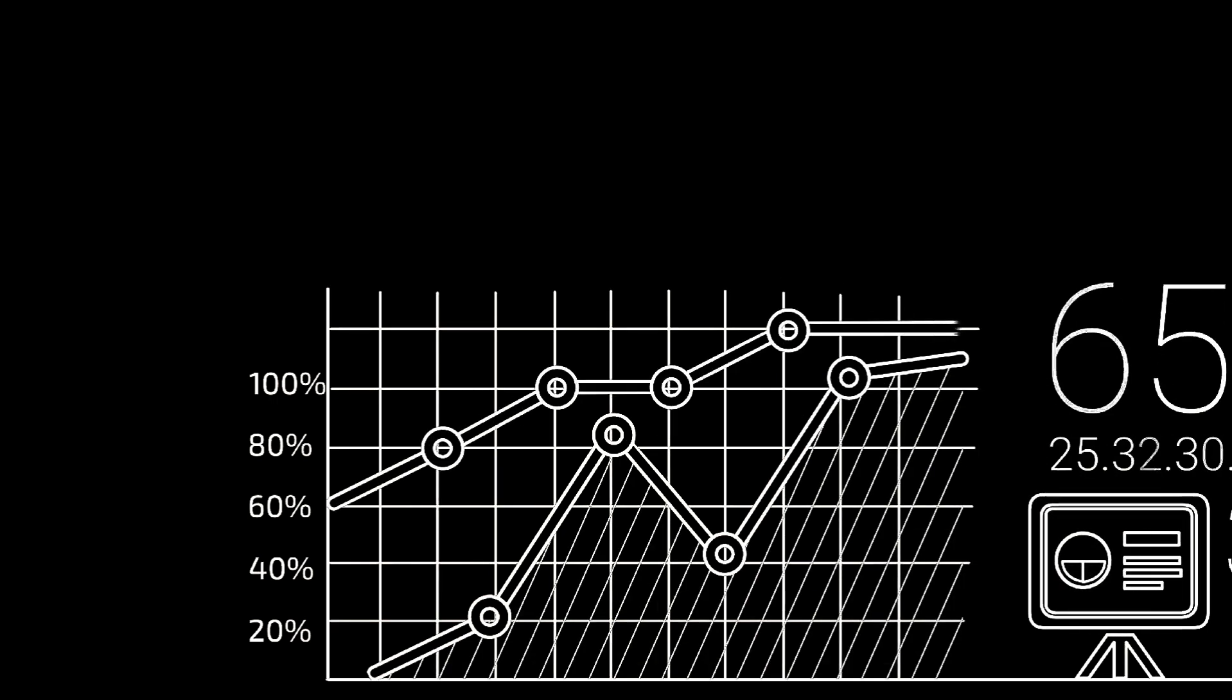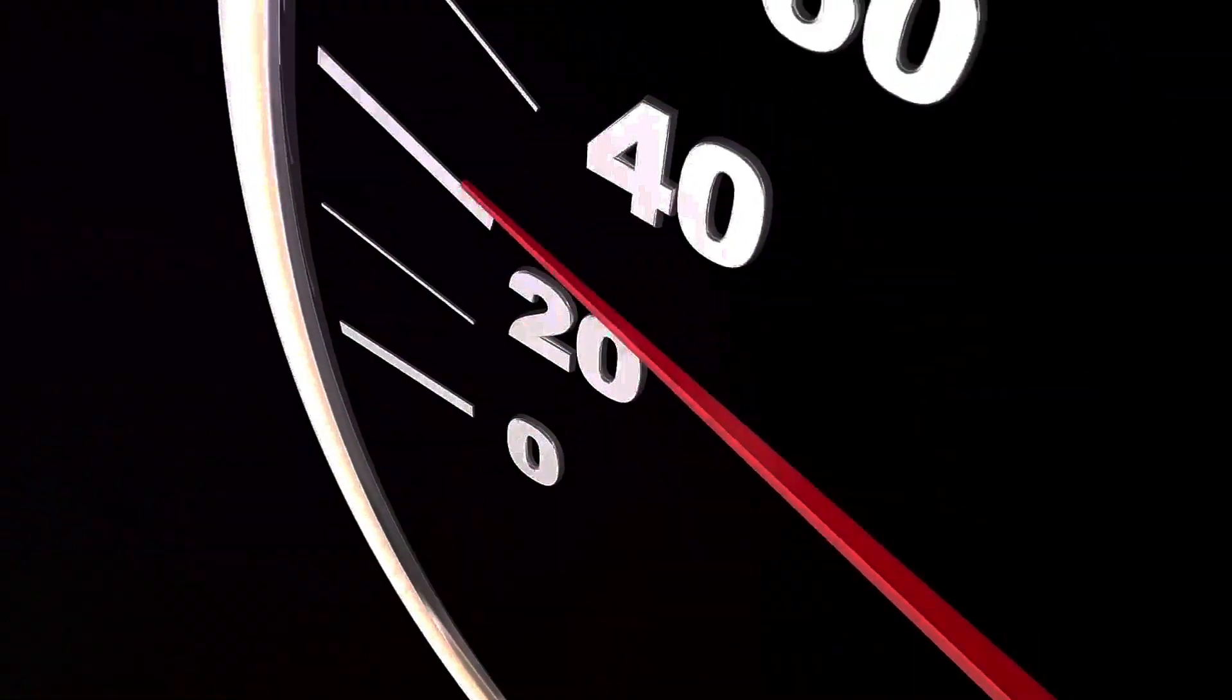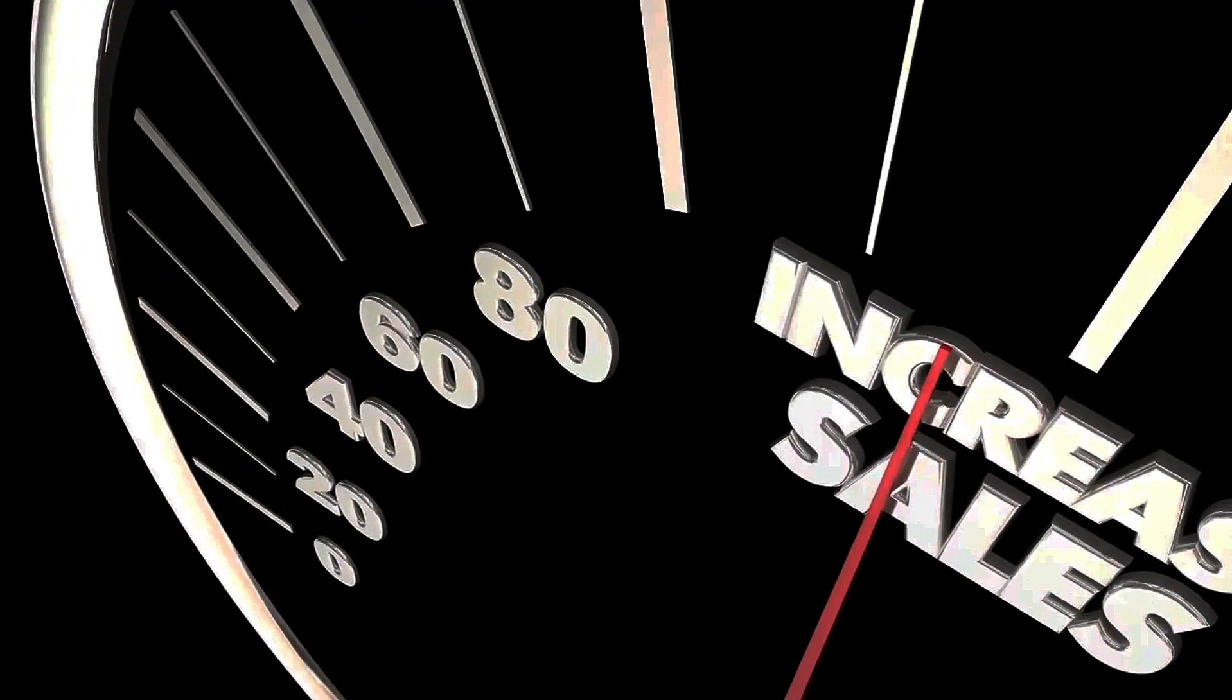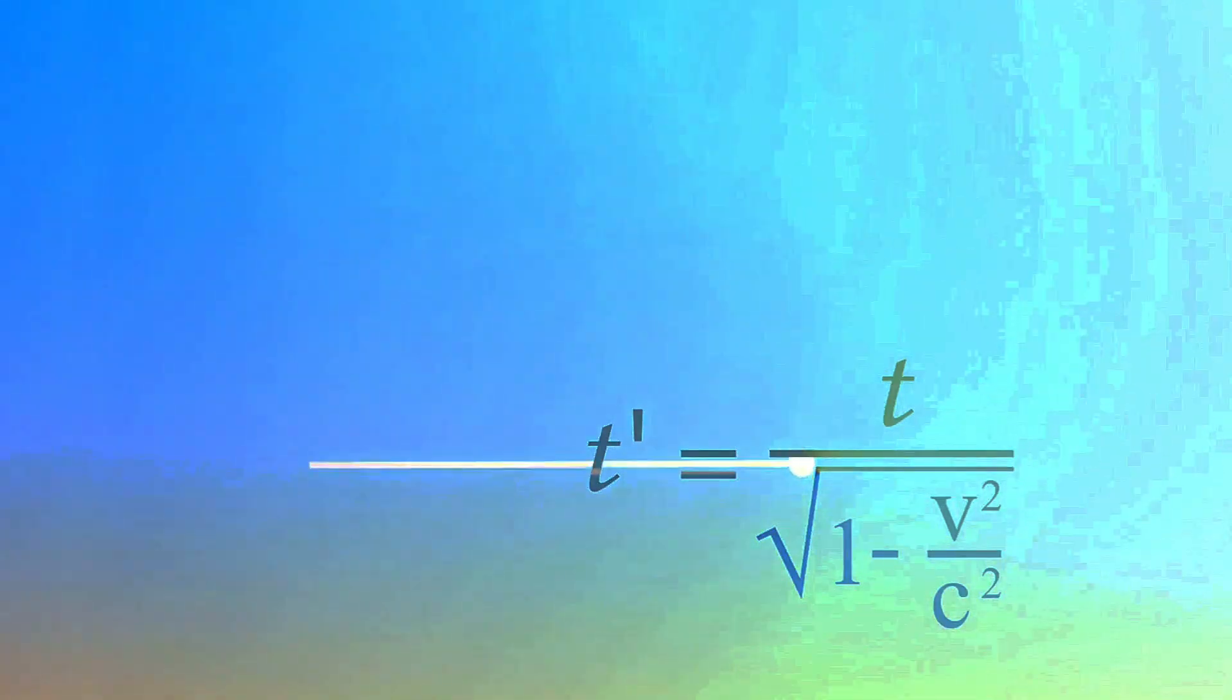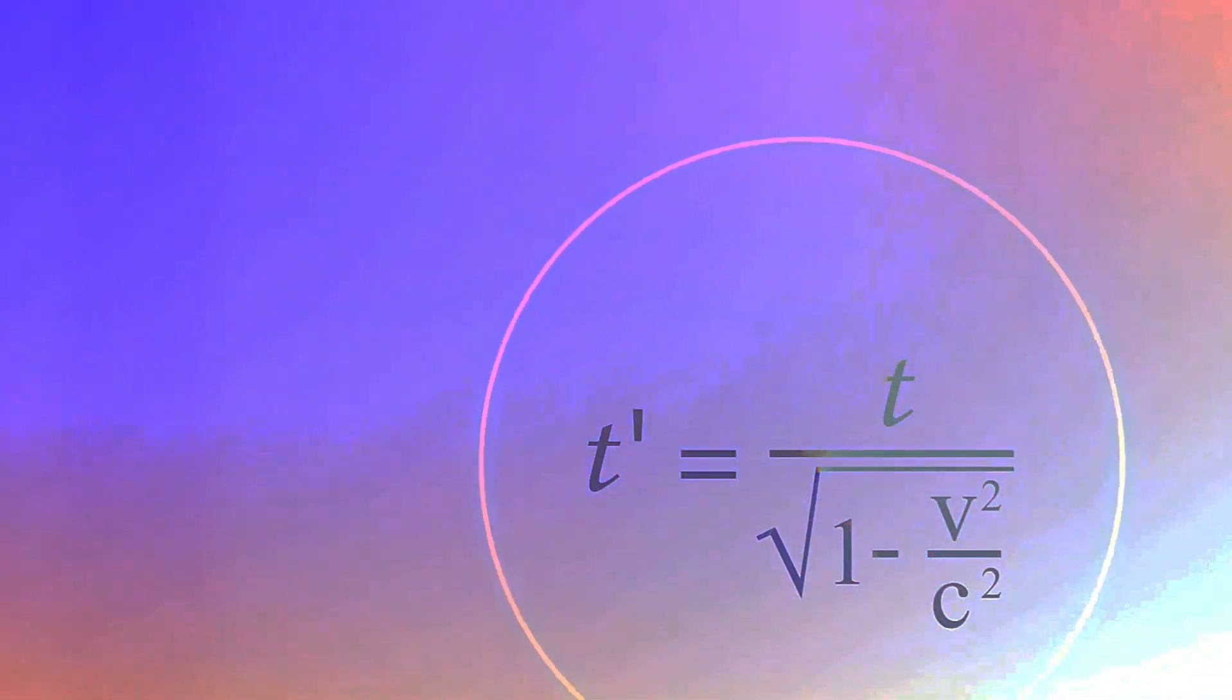Unlike these other constants, which have units associated with them, alpha is a truly dimensionless constant, which means it is simply a pure number with no units associated with it at all. While the speed of light might be different if you measure it in meters per second, feet per year, miles per hour, or any other unit, alpha always has the same value. For this reason, it's considered to be one of the fundamental constants that describes our universe.